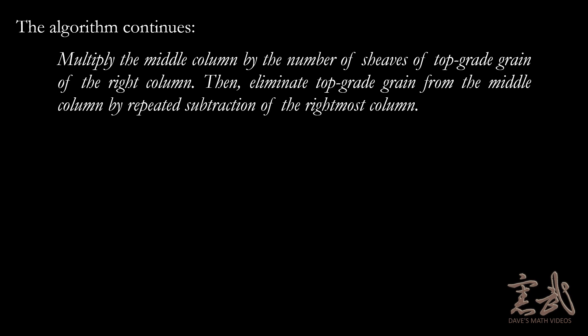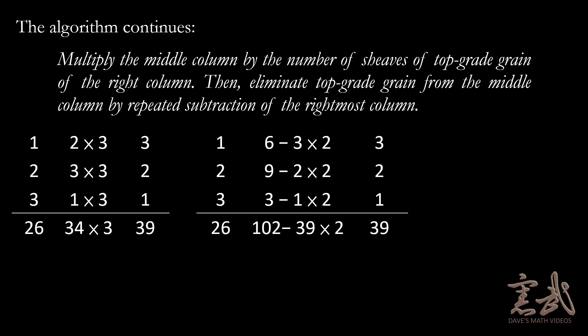The algorithm continues by saying, multiply the middle column by the number of sheaves of top grade grain of the right column. Then eliminate top grade grain from the middle column by repeated subtraction of the rightmost column. What this means is because there are three sheaves of top grade grain in the right column, you take every number in the right-hand column and multiply it by three. Next, because three goes into six two times, you multiply every number in the right-hand column by two and subtract it from every number in the middle column. This leaves us with zero, five, one, and twenty-four in the middle column.